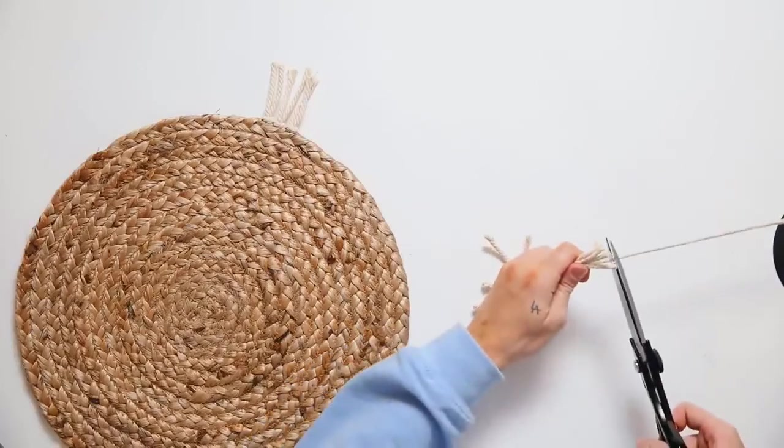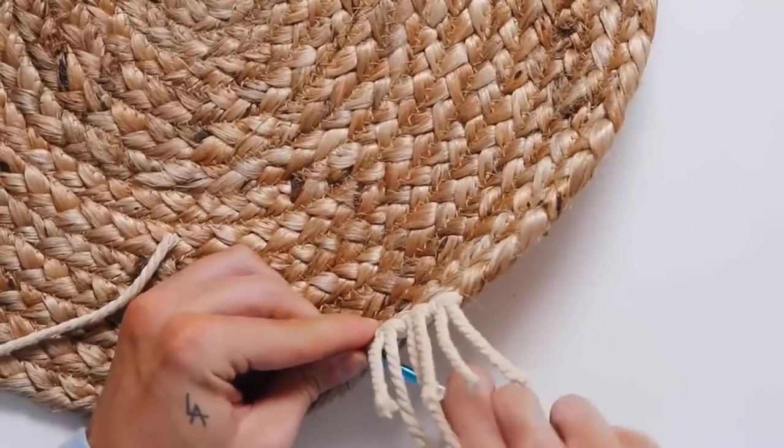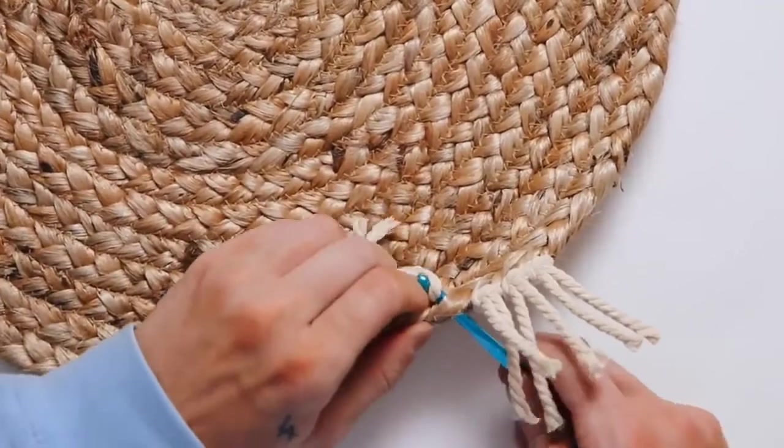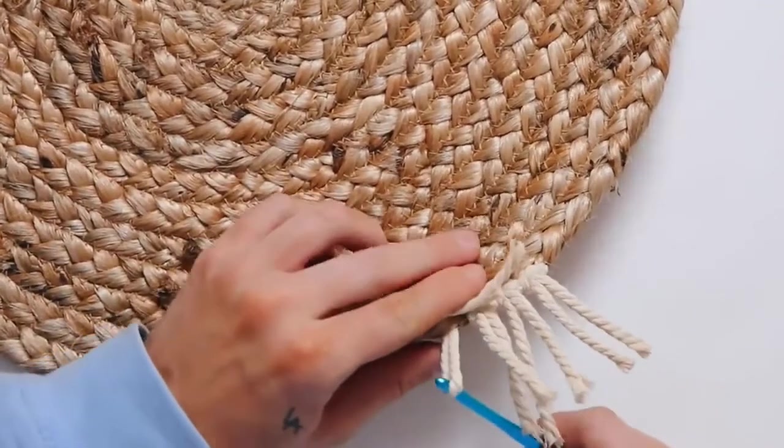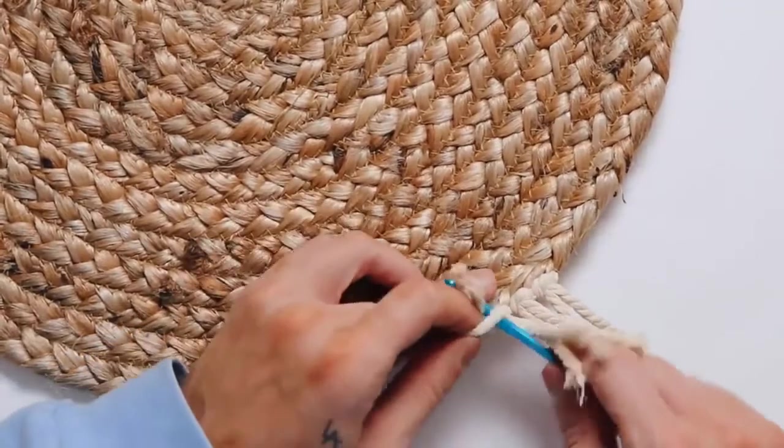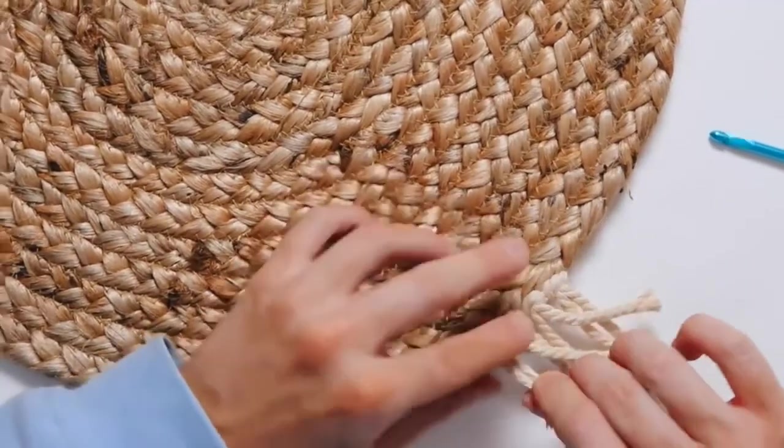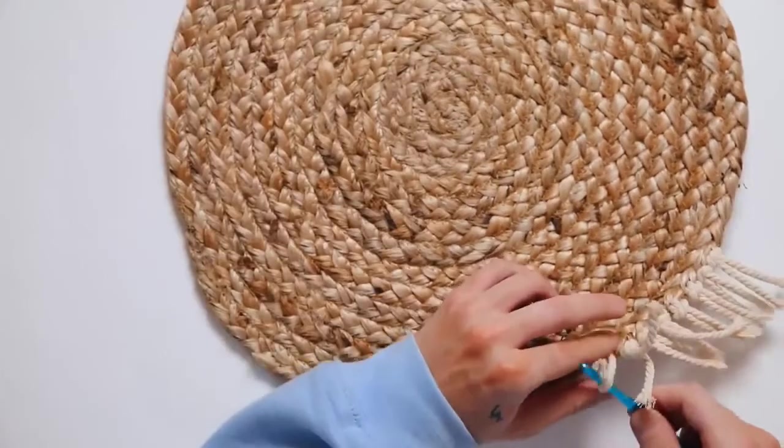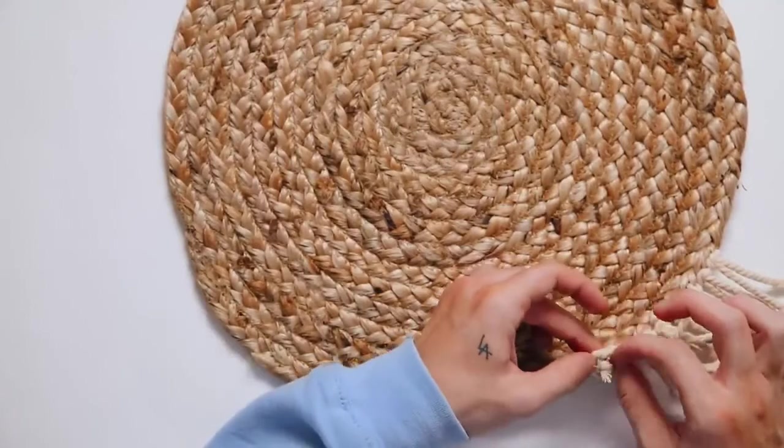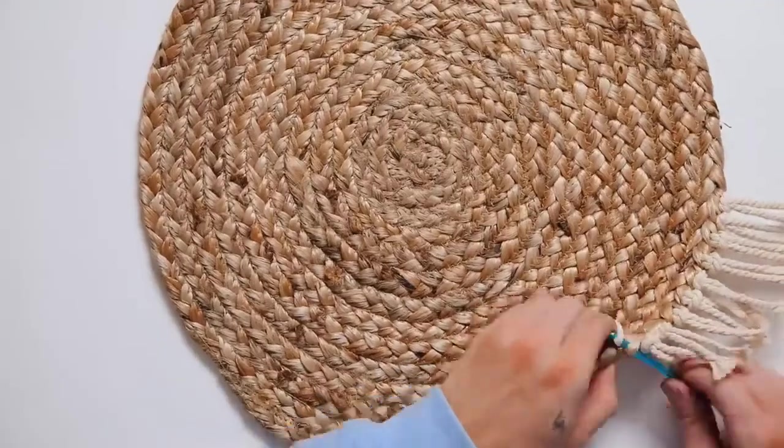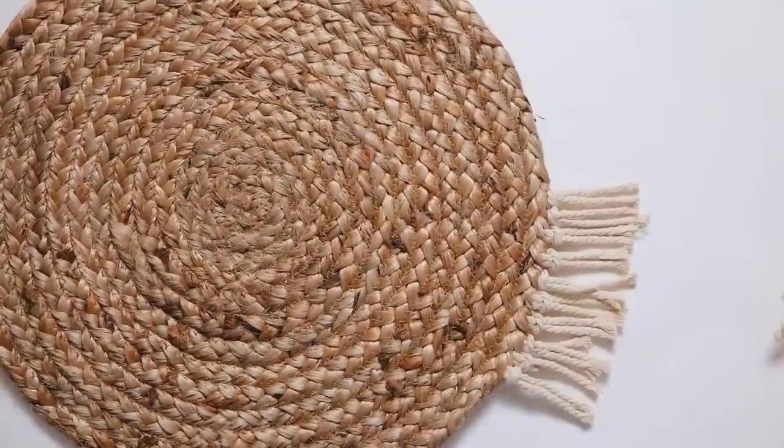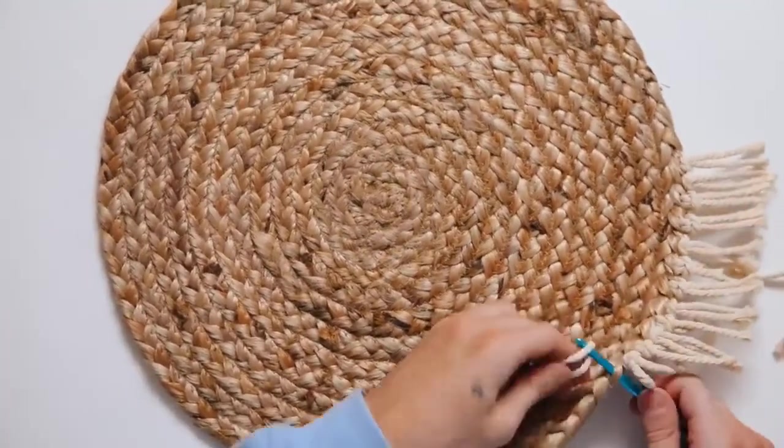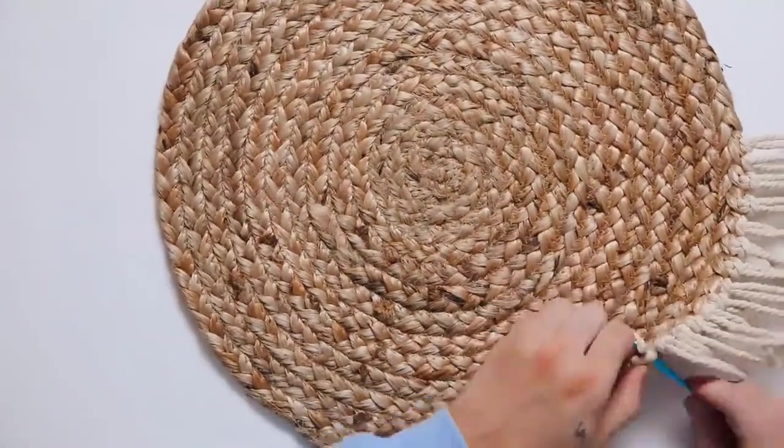I'm using a crochet hook and pushing it up through that natural material on the side. It's very easy to put through. You're going to loop through your tassel and pull the ends through, creating these tassels around the entire edge of this piece.